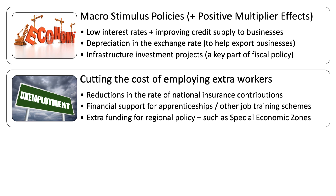The second demand-side approach, which many students don't use but could consider, is cutting the cost of employing extra workers. National Insurance, for example, is effectively a tax on employment in the UK, and cutting National Insurance contribution rates — particularly if a business takes on a long-term unemployed worker — could be effective. The government could also increase spending, offering financial support for apprenticeships and other specific job training schemes.